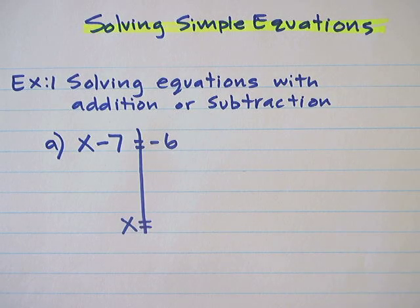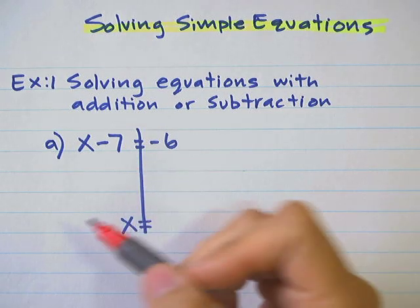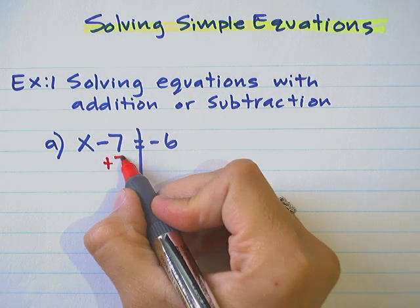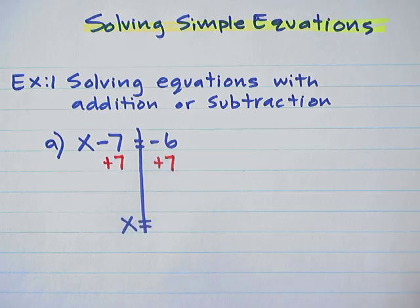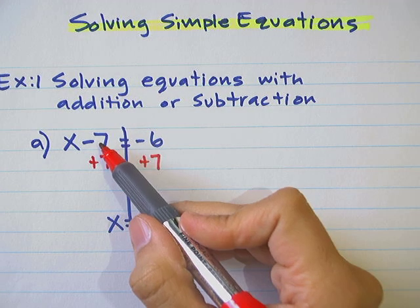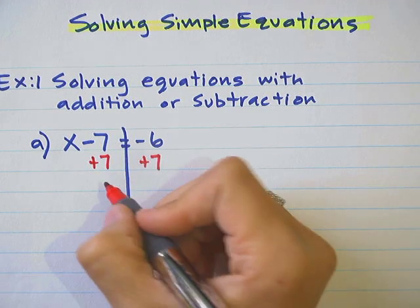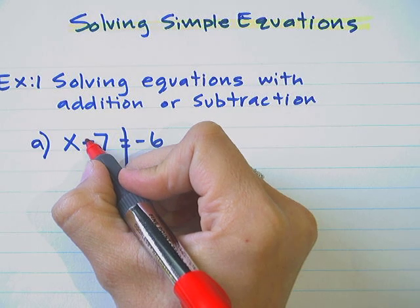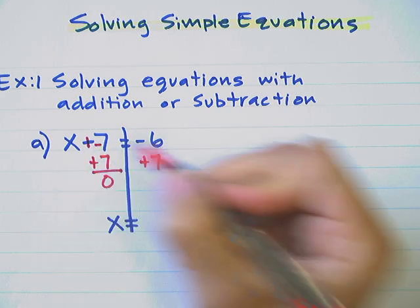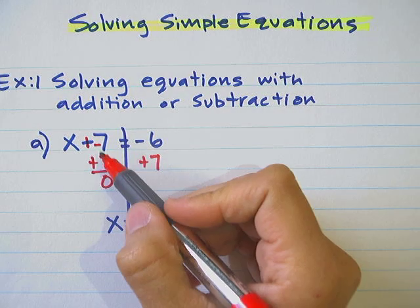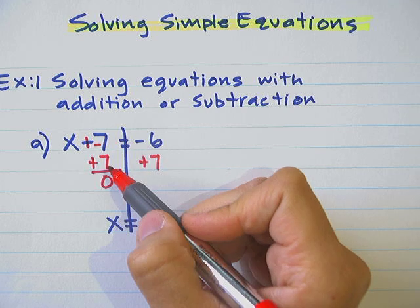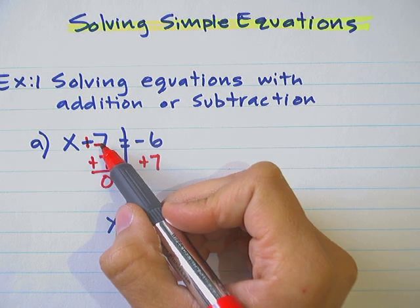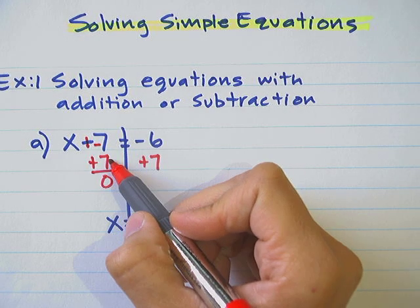This is a subtraction of 7, and the opposite of subtracting is adding 7. Sometimes students will see this as a negative 7 — and a negative 7 and a positive 7 give us 0. A subtraction means you're adding the opposite. So two ways to look at this: subtracting 7, the inverse operation is adding 7; or you have a negative 7, and when you add 7, you get 0.